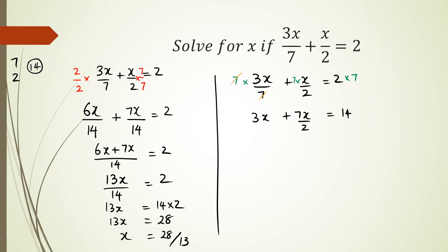Now I need to get rid of the 2, so I multiply all the terms by 2. And what you'll notice is now the 2 disappears, and I've got 3x times 2, which is 6x plus 7x equals 14 times 2, which is 28.